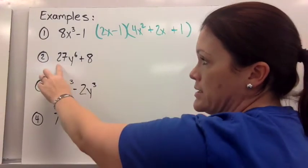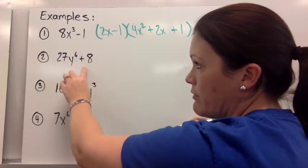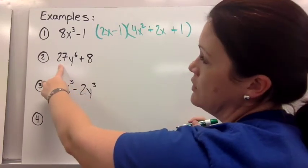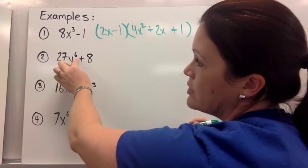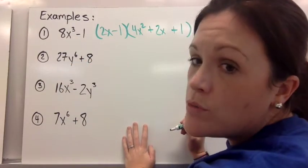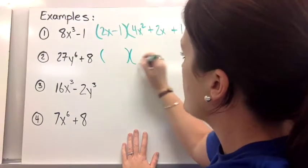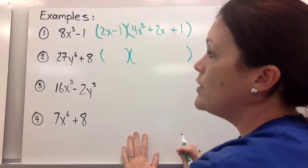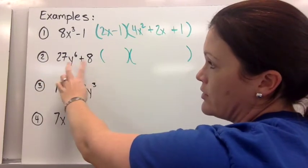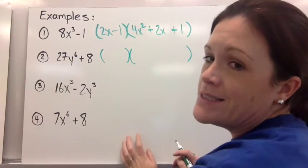Let's look at number 2. So you want to check and see, is everything here a perfect cube? 27 is a perfect cube, that's 3 cubed. Y to the 6 power, the 6 is divisible by 3. And 8 is 2 cubed. So this one would also work just to go ahead and factor a binomial and a trinomial factor. You also want to check for greatest common factor. But on this one there is nothing I can take out first.